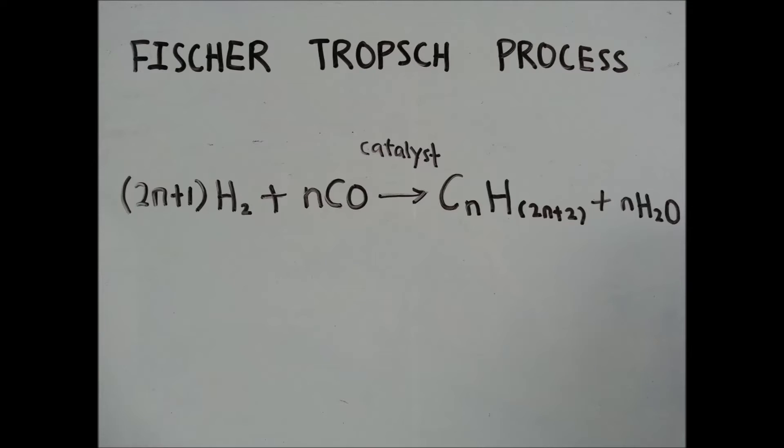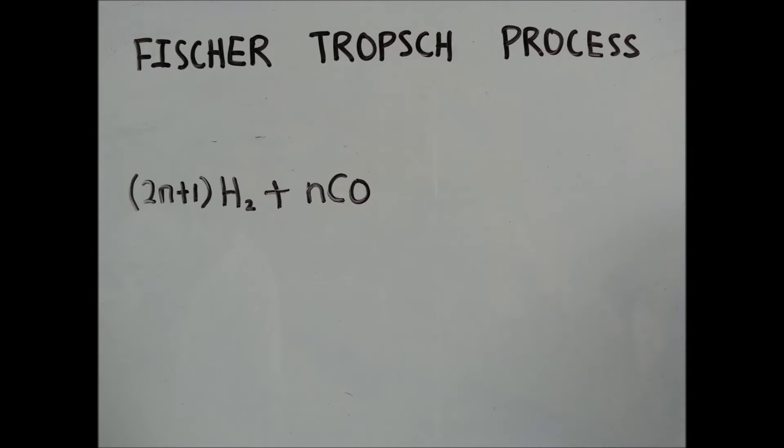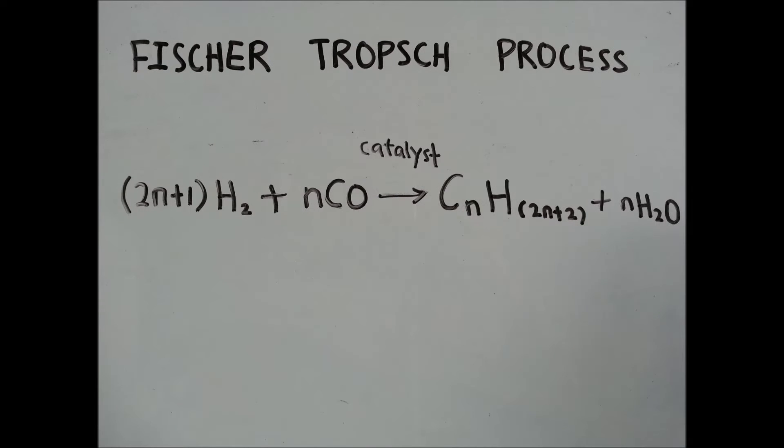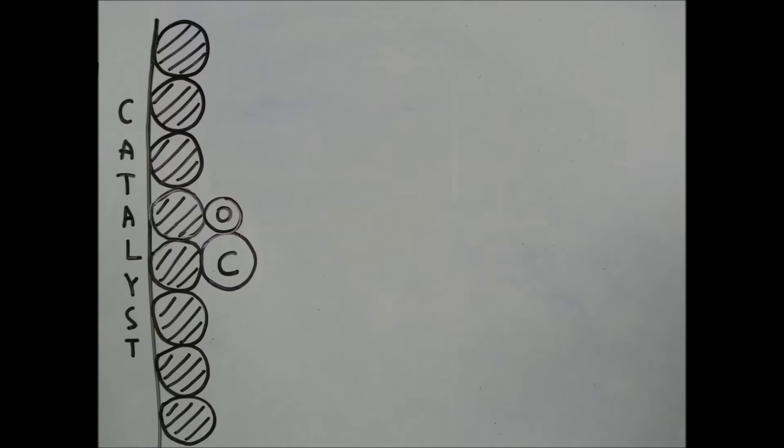This is the general equation for the Fischer-Tropsch reaction. During the Fischer-Tropsch reaction, carbon monoxide and hydrogen are converted to hydrocarbons and water with the aid of a catalyst.